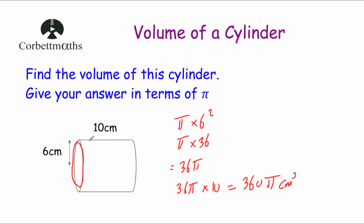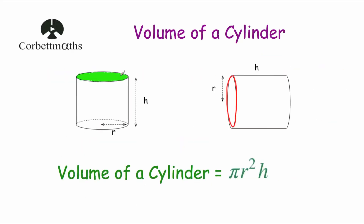So to find the volume of a cylinder, you can find the area of the circle and then multiply by how tall or how long the cylinder is. Alternatively, you can use the formula pi r squared h. I really hope you found this video useful — please like it and subscribe to the YouTube channel. If you scroll down beneath this video on Cobra Mavs, you'll find another video showing how to find the height or radius if you're given the volume of a cylinder.